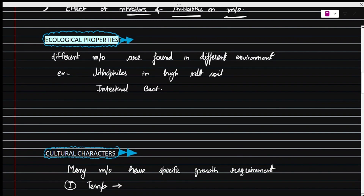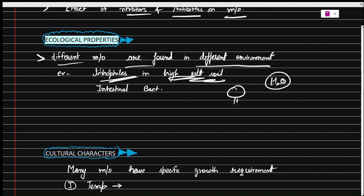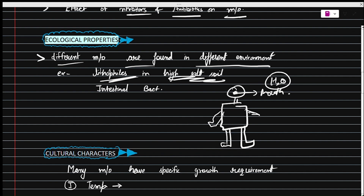After that comes ecological properties. Different microorganisms are found in different environments — for example, lithophiles are found in high soil areas and hydrophiles are found in water bodies. Humans can also act as an ecosystem, with some bacteria found as normal microflora. For instance, specific bacteria found in the mouth will not be found in the stomach or small intestine — intestinal bacteria differ from oral bacteria.